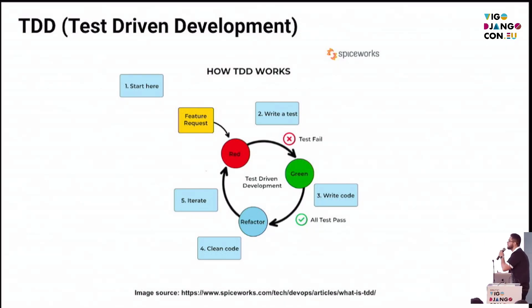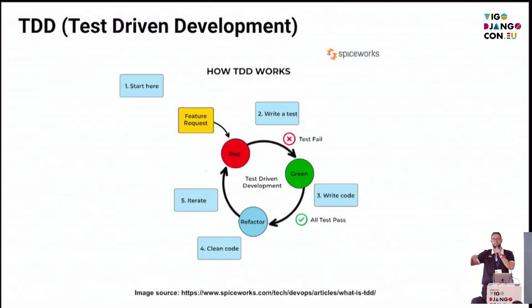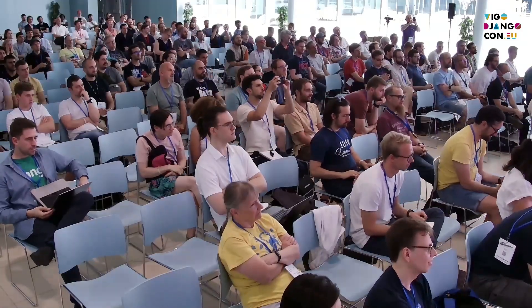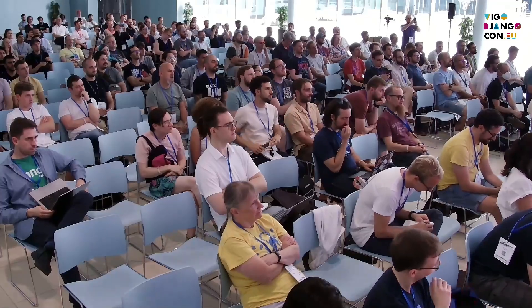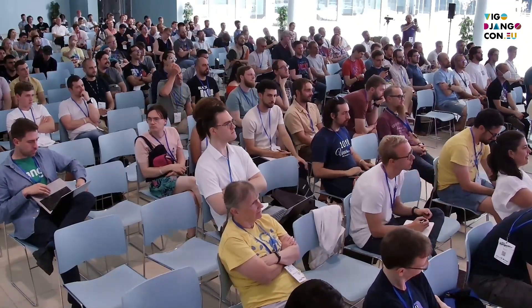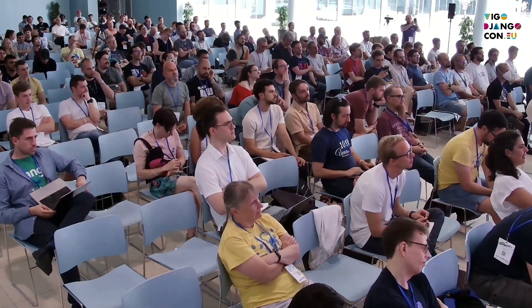What is the best way? They call it TDD — test-driven development. Who here is working using the TDD approach in your day? There are a lot of people — I'm so happy. The TDD is divided into five steps. First, you receive the feature request or bug report. After that, you need to start writing the test.